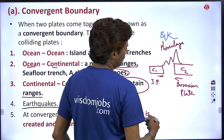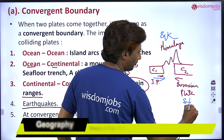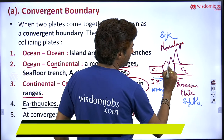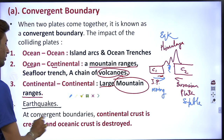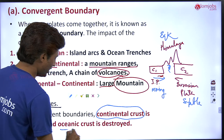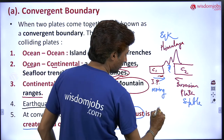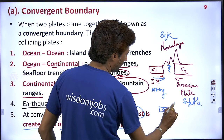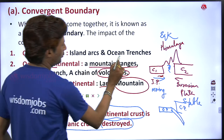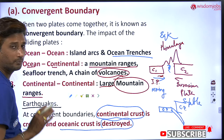This collision will also lead to the formation of earthquakes. The Himalayan region is a very high earthquake-prone region because the Indian plate is still moving and colliding over the Eurasian plate. The Eurasian plate is stable, but the Indian plate is continuously moving and colliding on this plate, which results in earthquakes. At a convergent boundary, continental crust is created and oceanic crust is destroyed.